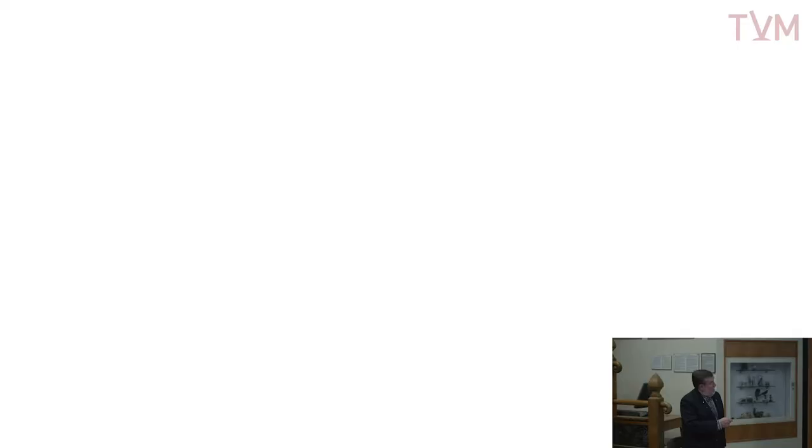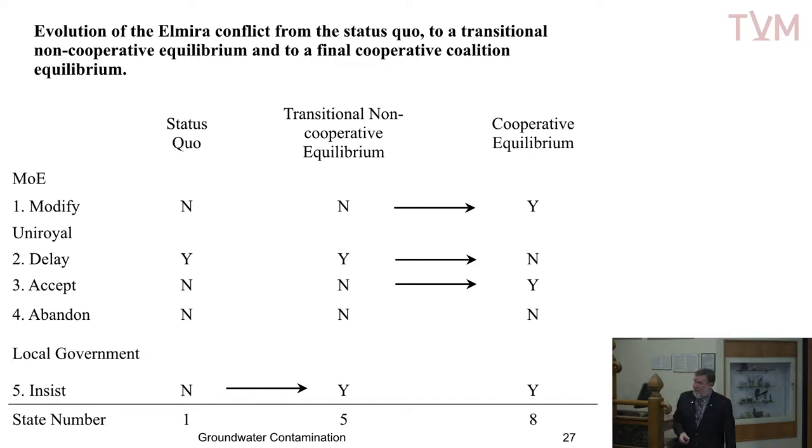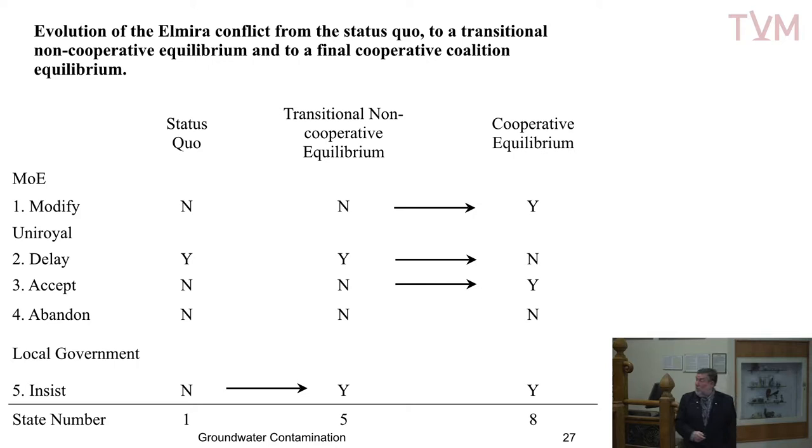For example, the Ministry of the Environment could modify the control order — water it down a bit. Uniroyal could delay negotiations — that's dragging their feet. They could also accept the current control order, or abandon the plant, which was actually threatened in Elmira. The local government could strongly insist they clean up the mess. Notice we're starting to calibrate the model with the key parameters: decision makers and the options available.